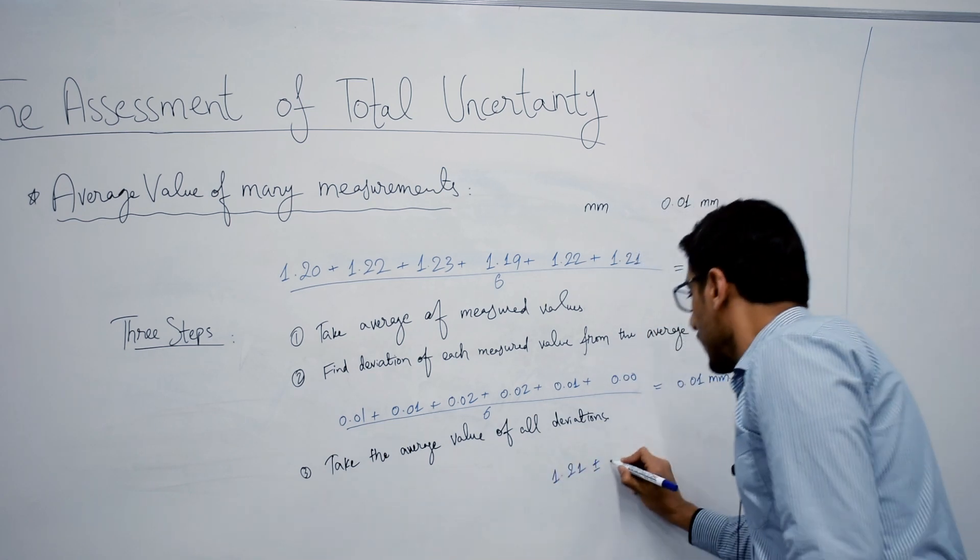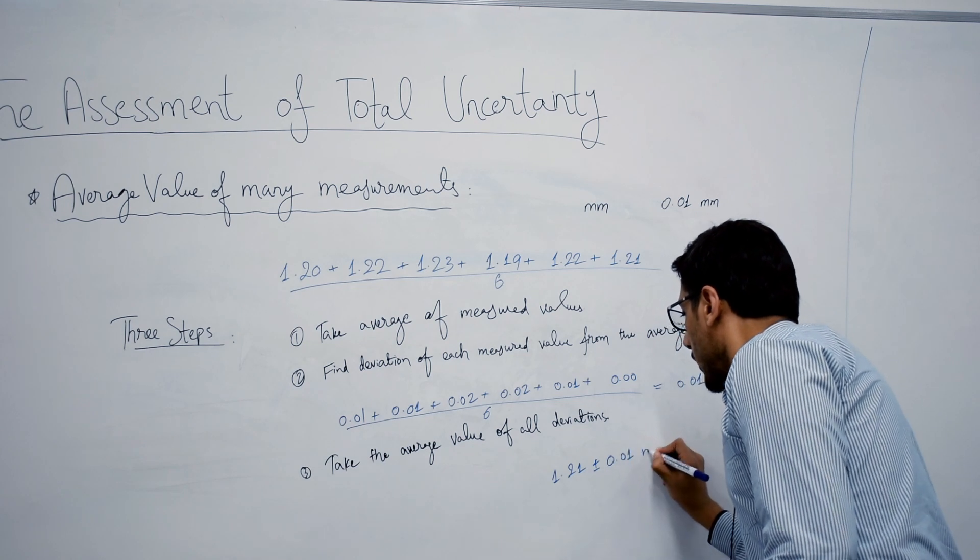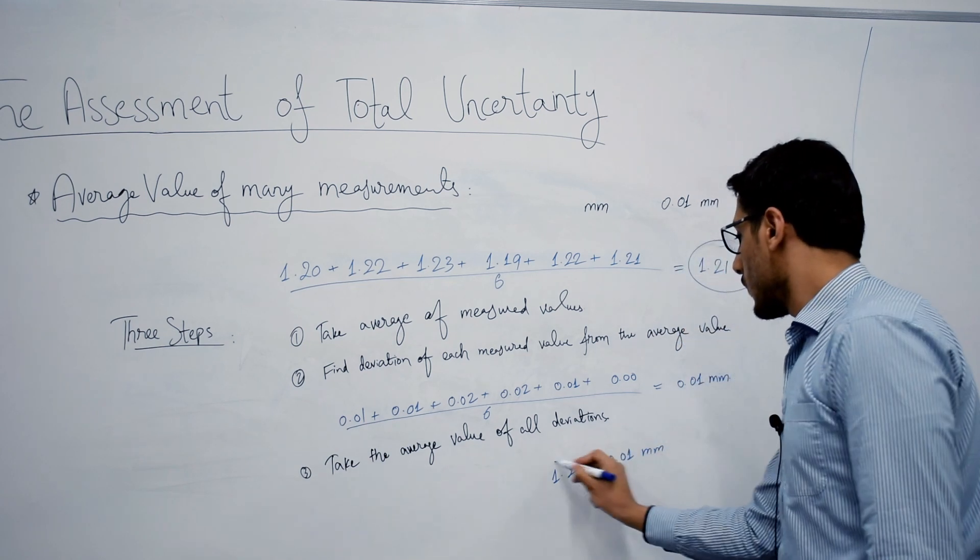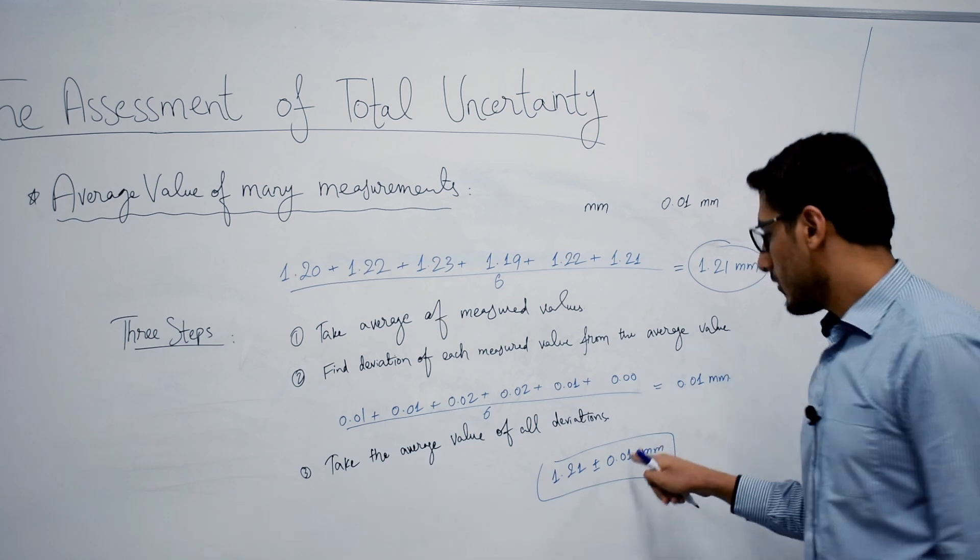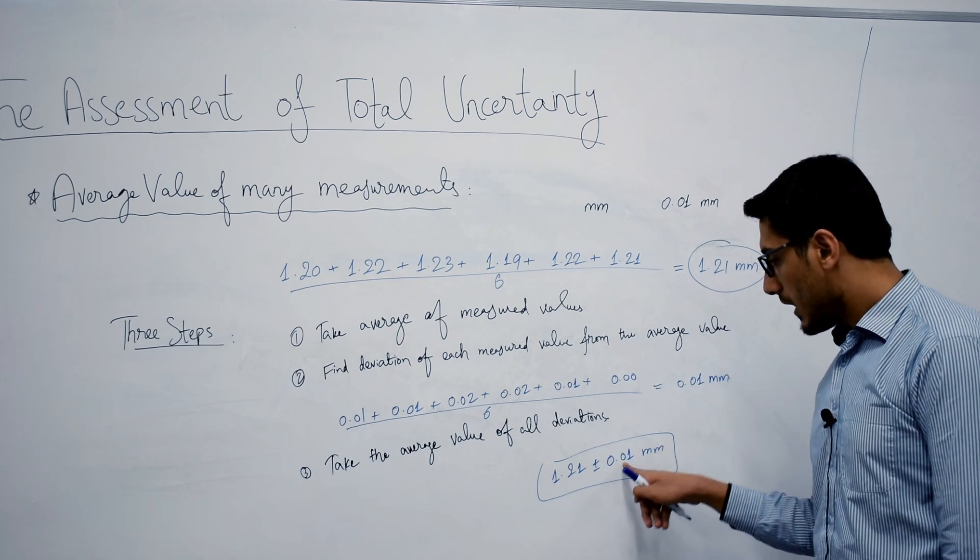1.21 plus minus 0.01 mm. This is your final result, where we have calculated the absolute uncertainty in the case of averaging as 0.01 mm using and implementing these three steps.